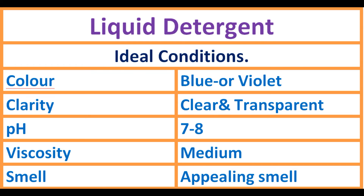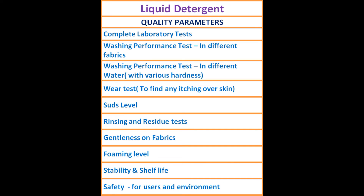Finally, the perfume smell — it should be an appealing smell and pleasant aroma. Before launching the liquid detergent for commercial purposes, it is advisable to check all these quality parameters: complete chemical analysis, washing performance test in different fabrics, washing performance test in different water hardness levels, skin irritation (via) test — to find whether there are any itchings due to the liquid detergent for women or babies with sensitive skin — and other parameters like SATS level, rinsing and residue tests, and gentleness on fabrics.